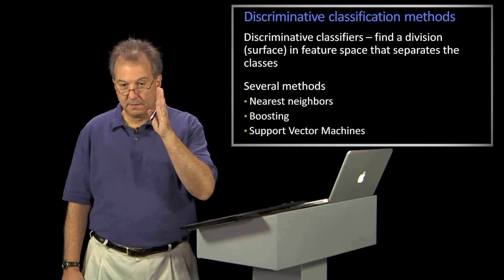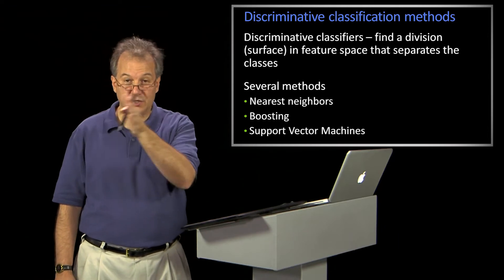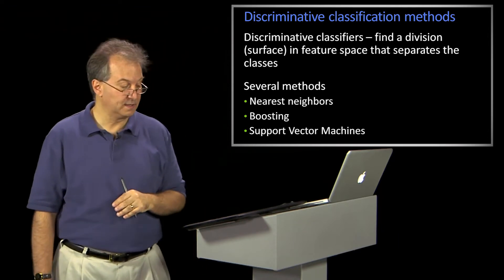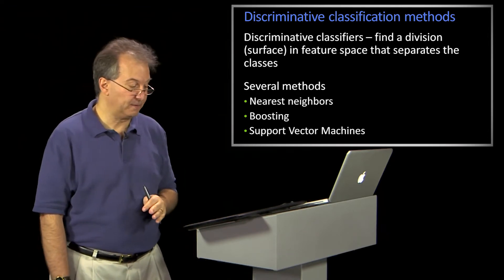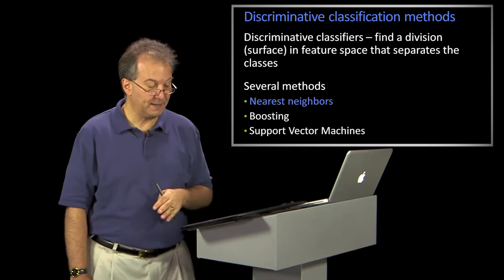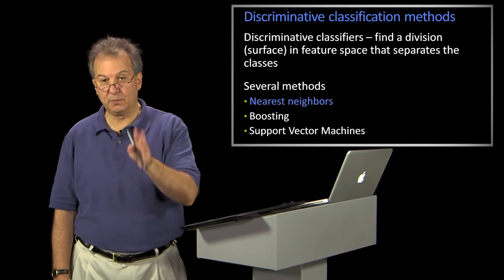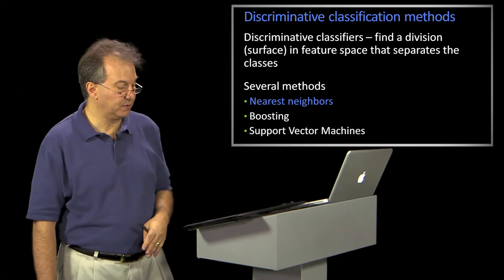What about those discriminative methods we're talking about? As we said before, they find a division, a surface, between the classes. We're going to talk about a couple of different methods. The one I want to talk about today is nearest neighbors. And then we'll do separate lessons for each of the other two.